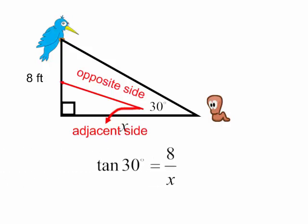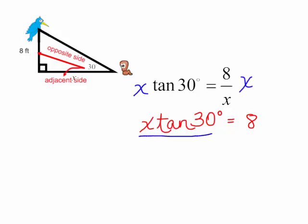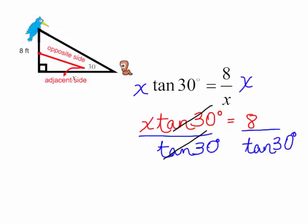So the tangent of this angle of 30 degrees is equal to the opposite over the adjacent side. In order to solve for X, I am going to multiply both sides by X. I will now have X times the tangent of 30 degrees is equal to 8. Now divide both sides by the tangent of 30 degrees. And those will cancel.